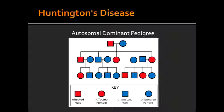What are some of the characteristics of Huntington's Disease? It is characterized by chorea, aggression, depression, and dementia. Sometimes it can initially be mistaken for substance abuse.